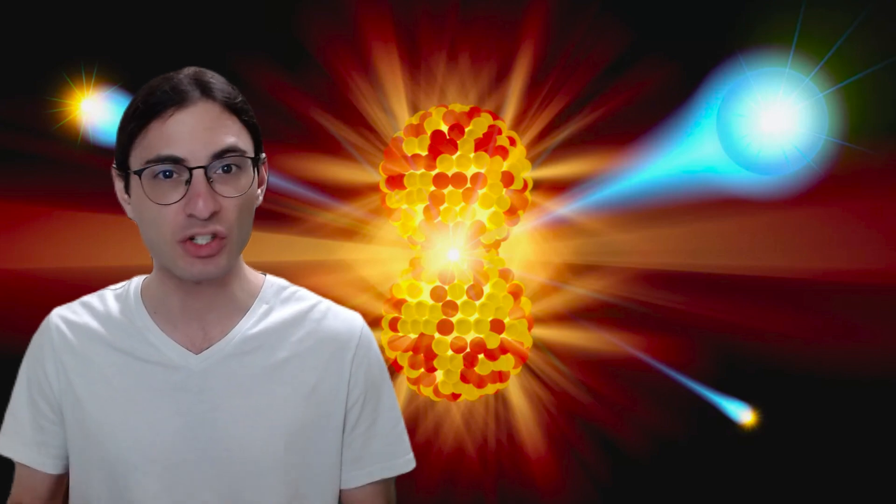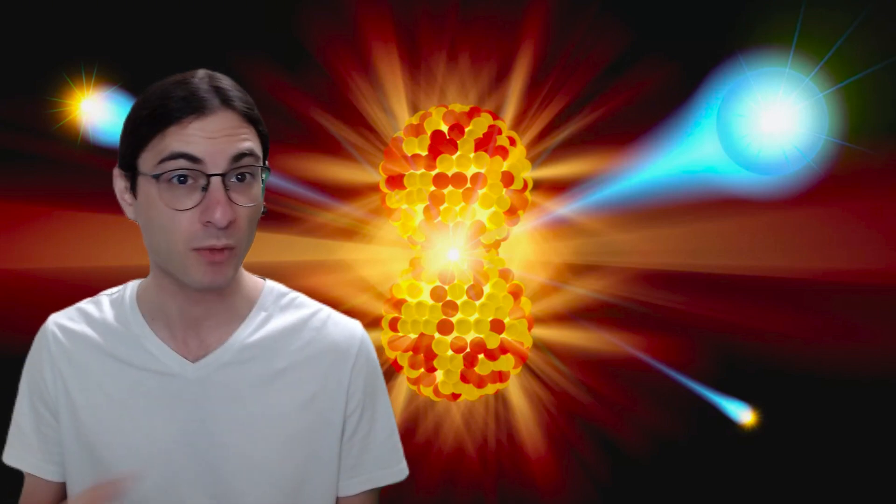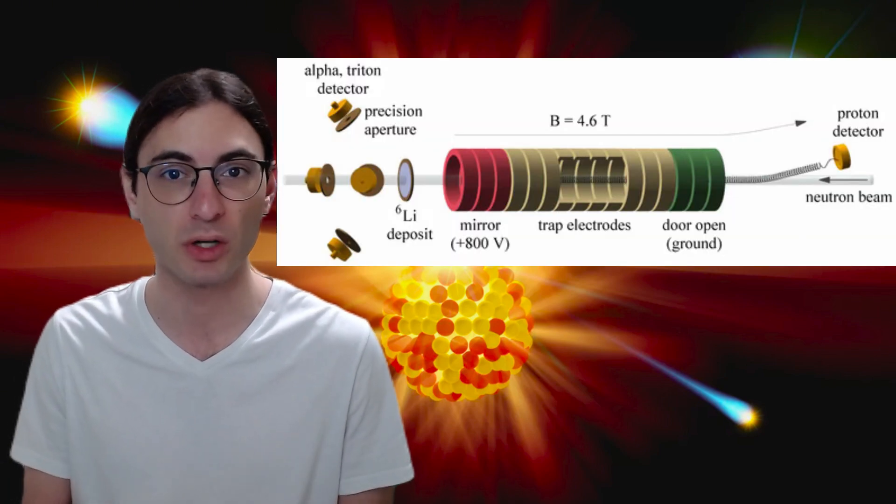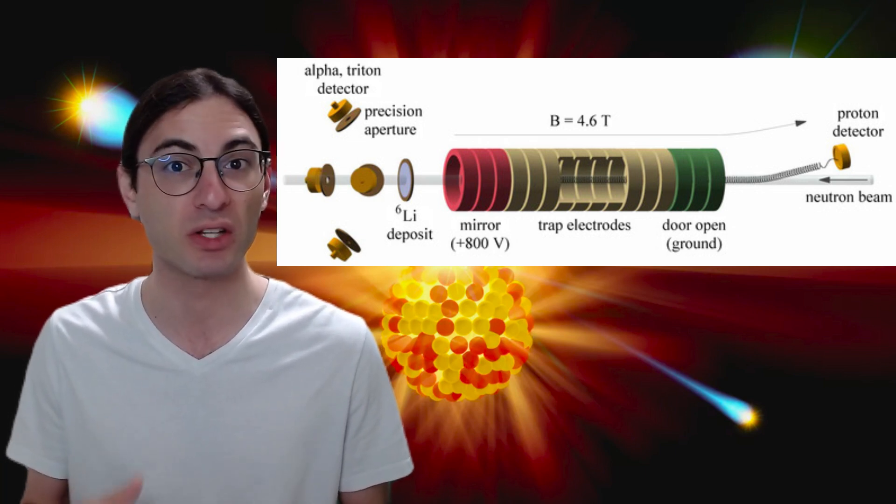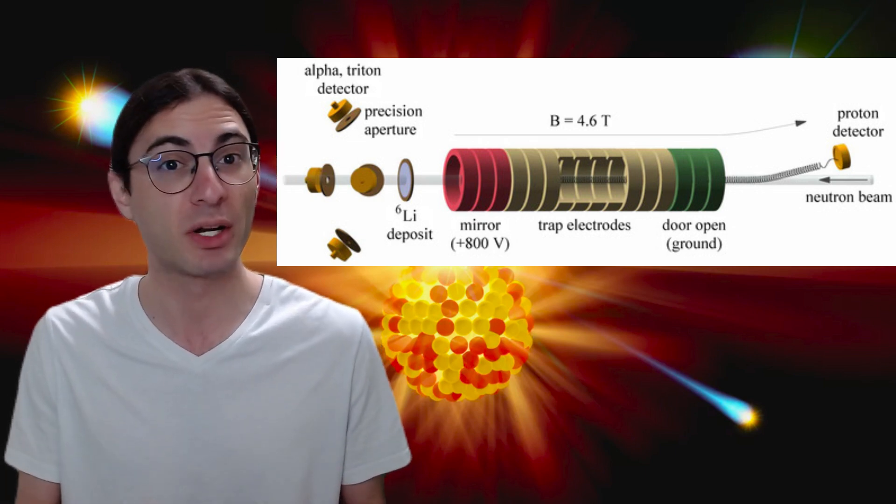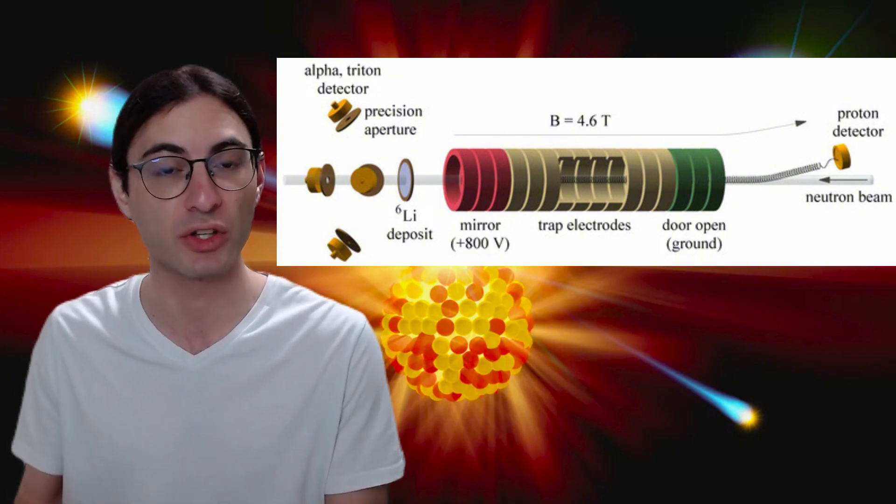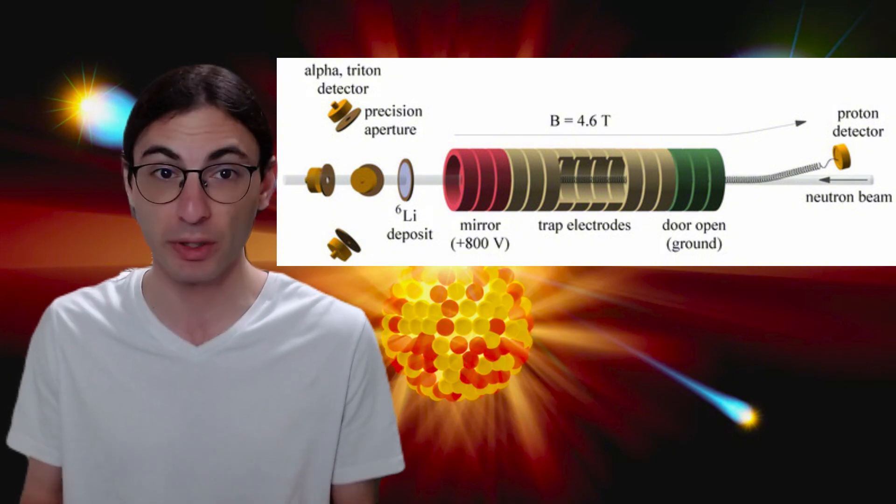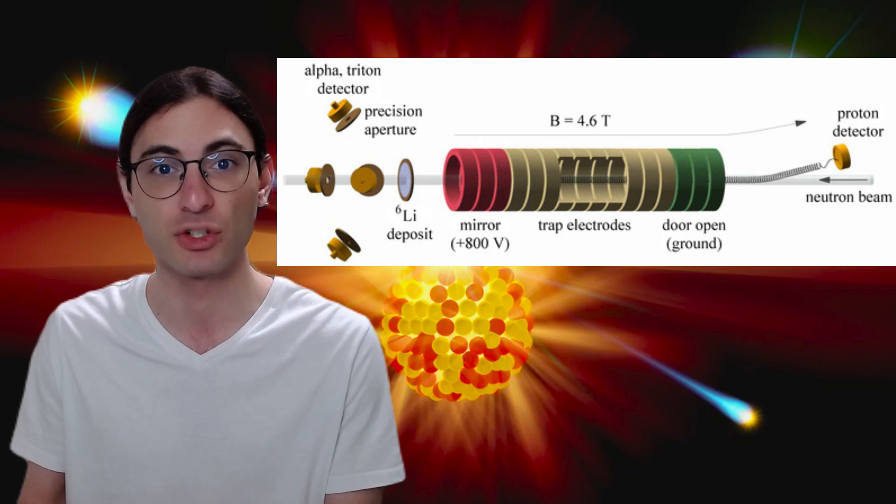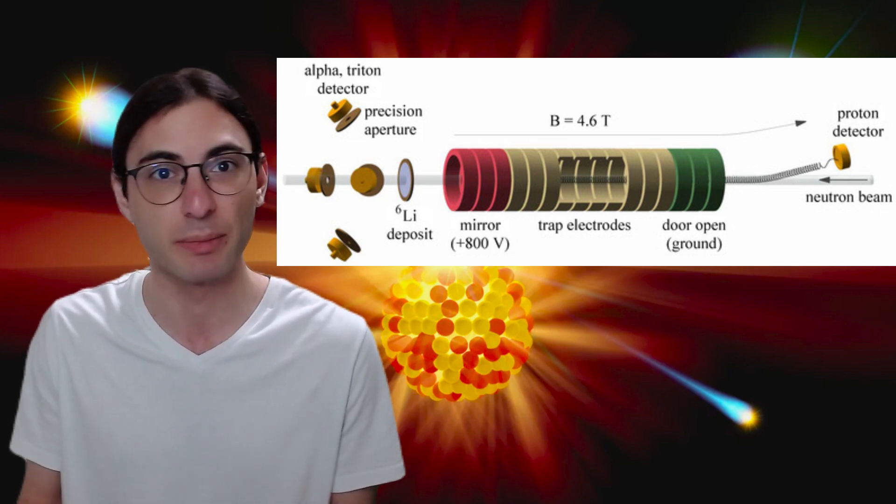See, there are basically two ways to measure the lifetime of a neutron. One way is to produce a slow beam of neutrons, say from a nuclear reactor, and measure the amount of protons given off by the beam. If you know how many neutrons are in the beam, and you count the protons resulting from decays, you can measure with high precision how long the average neutron lasts. And you get nearly 10 minutes and 15 seconds.